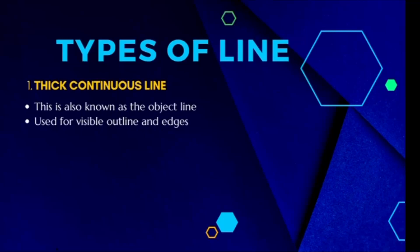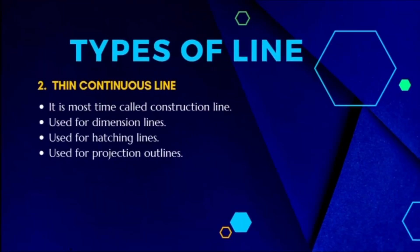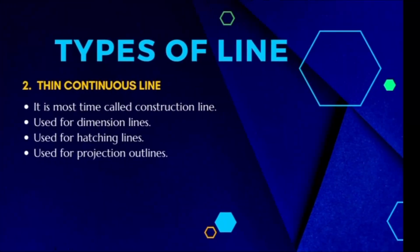The thick continuous line, also known as the object line, is mainly used for visible outlines and edges.